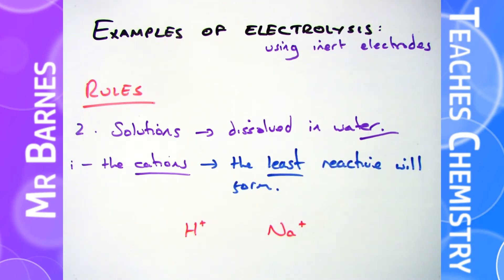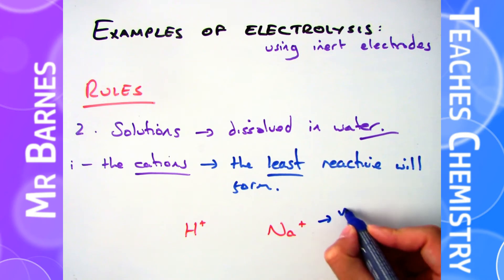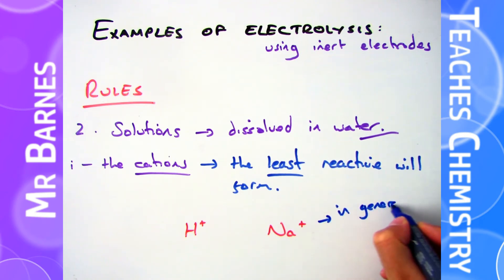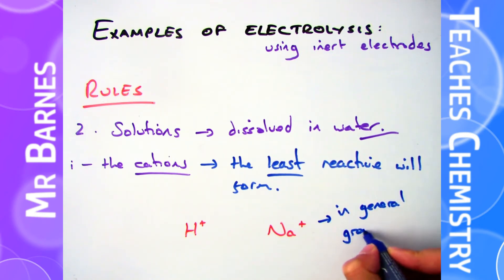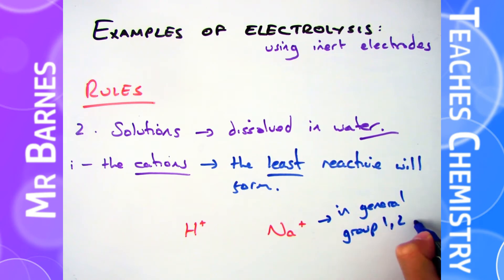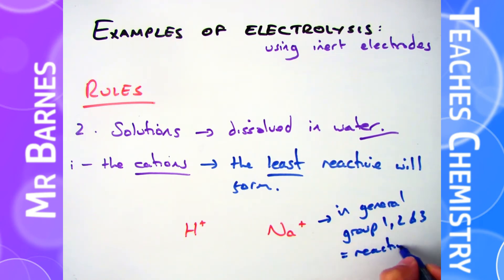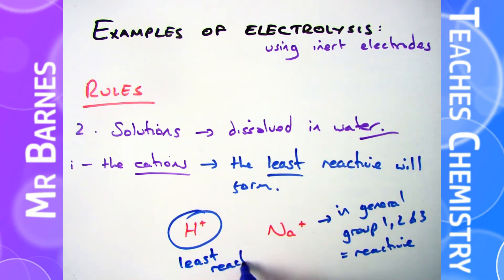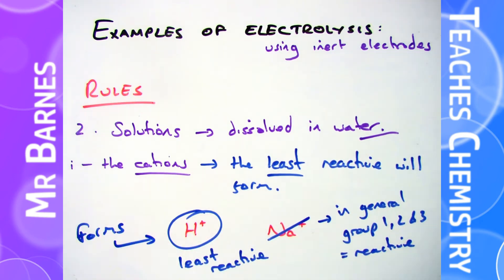The key is reactivity. You need to figure out which is more reactive - hydrogen or sodium - and the least reactive one is the one that will form. The general rule is that if you have Na+, or anything in group one, group two, or group three, they are reactive and in general more reactive than hydrogen, therefore it will be hydrogen that is produced. So in this situation with H+ and Na+, hydrogen is produced because it's the least reactive.